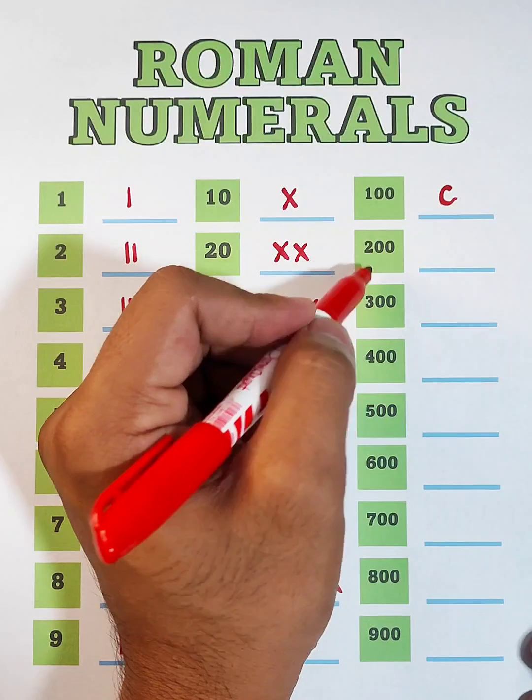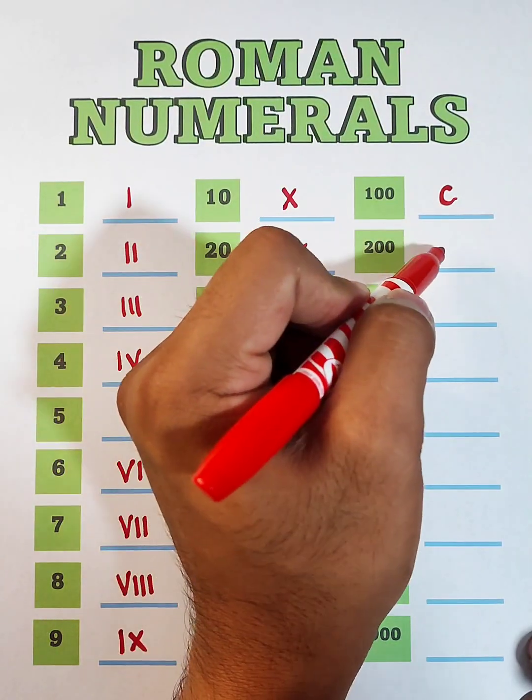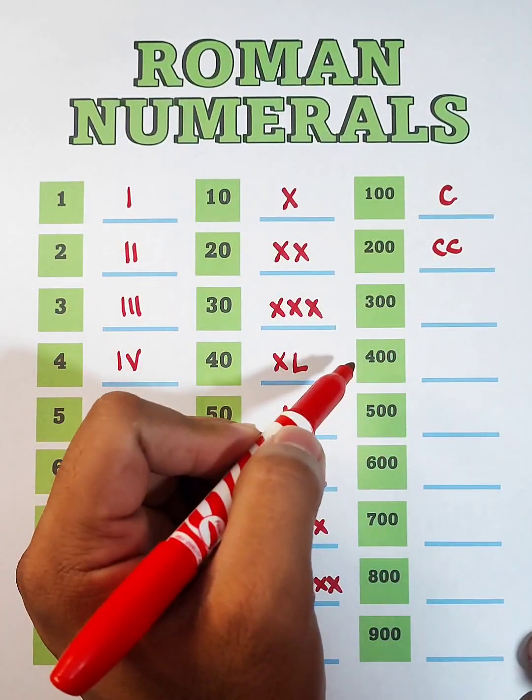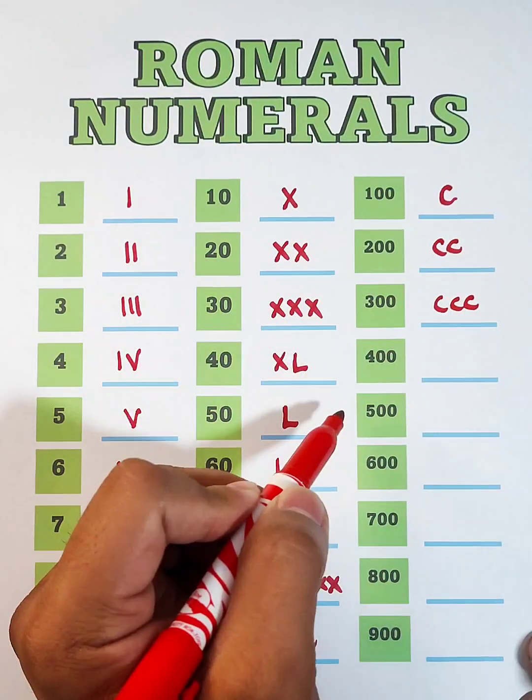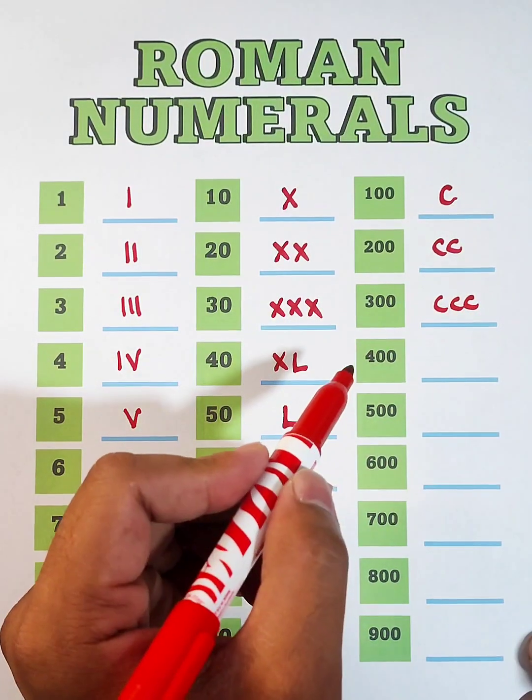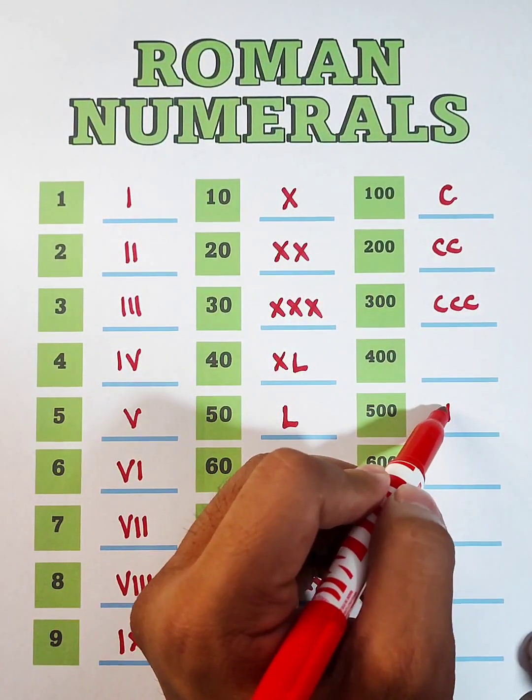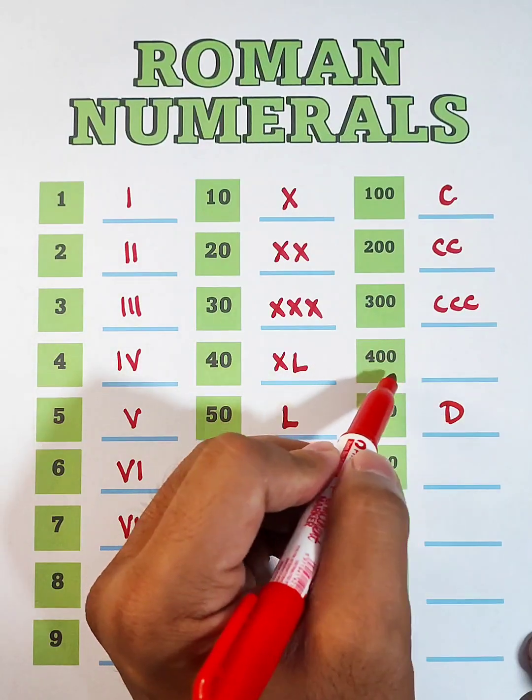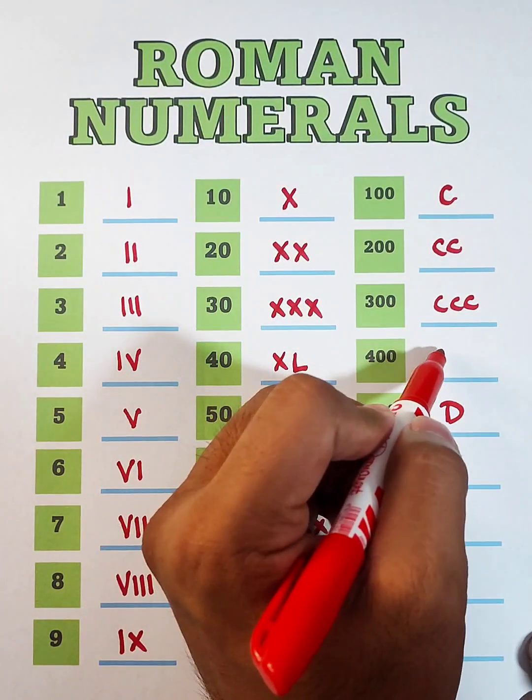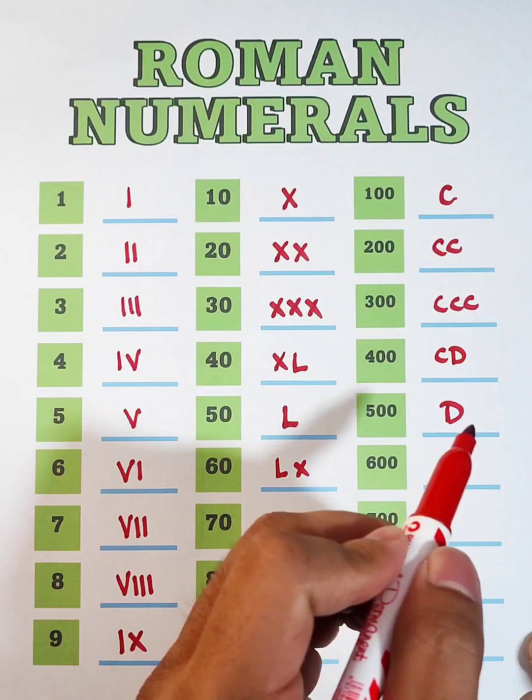Now, as for 200 and 300, we will use 2 letter C for 200, and 3 letter C for 300. For 400, since 500 is represented by letter D, we will represent 400 as 100 before 500, or CD.